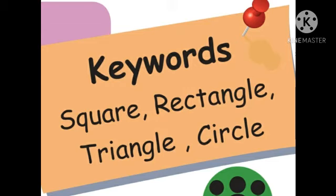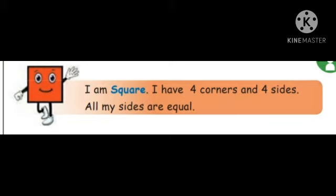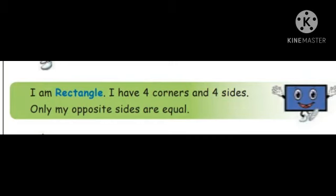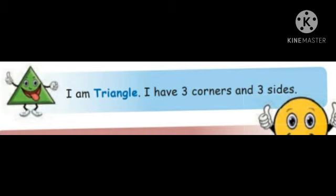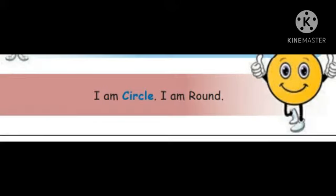Never forget all these shape keywords. Shall I ask you some questions? In a square, how many sides? Four sides. And how many corners? Four corners. Very good. Rectangle — opposite sides are equal. In a triangle, how many sides? Three sides and three corners. And a circle — no sides, no corners. Very good children.